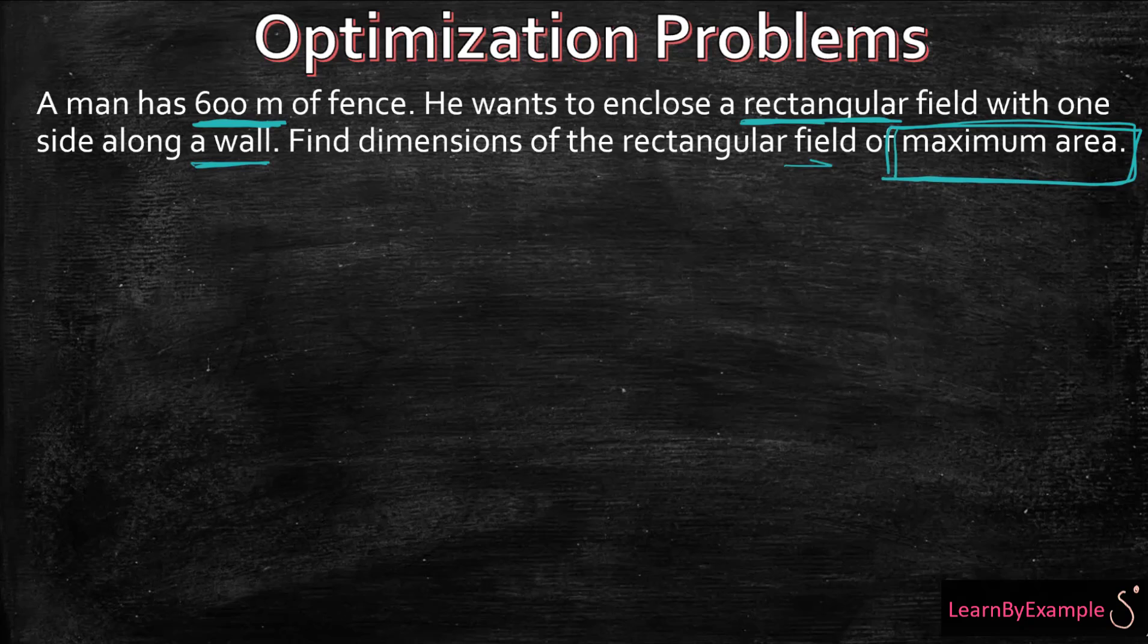So the first thing you want to do is draw just a little sketch just so that things are clear in our head. So if that's our wall, then this is the 600 meters of fence. So we have W, W, and L. We're trying to find these dimensions of W and L in order to maximize this area in here.